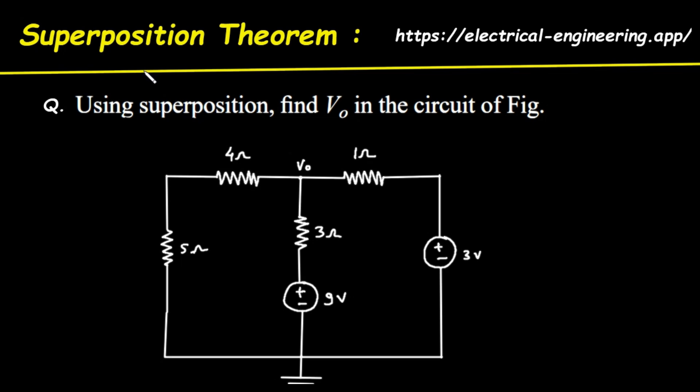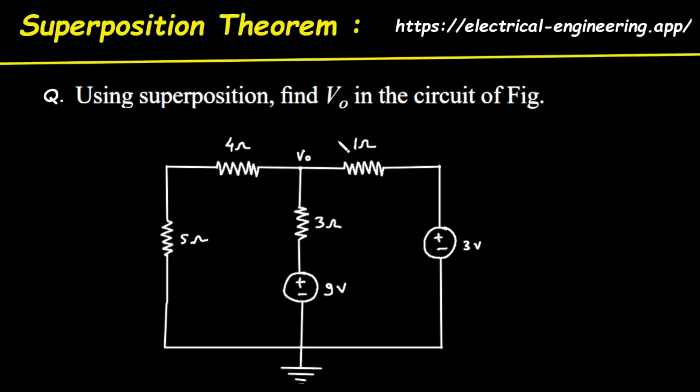Hello and welcome. In this video, we're going to walk through a classic electronics problem step by step. Our goal is to find the voltage, which we'll call V0, at a specific point in the circuit shown on the screen. We'll be using a powerful technique called the superposition theorem.